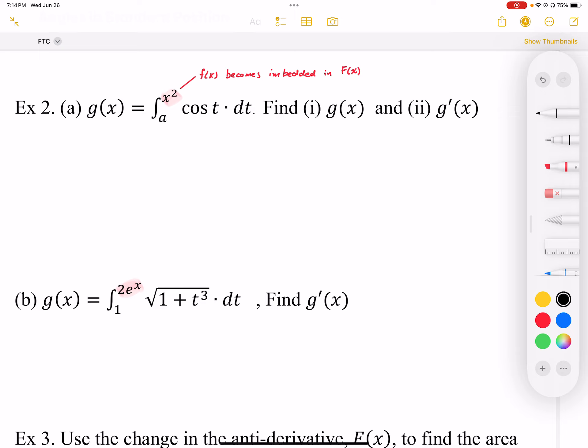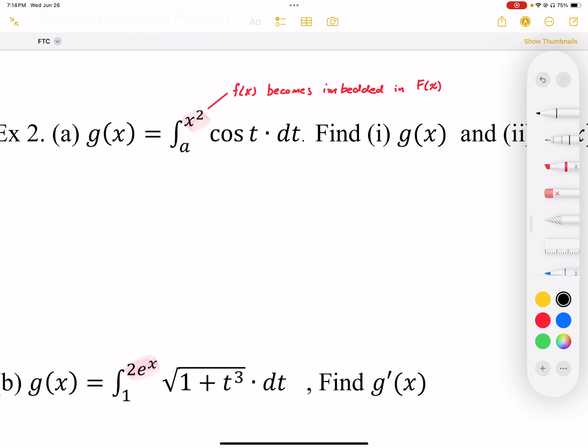We've seen that the integral and the derivative undo each other. Now what happens in this case here? Notice that in this case we now have a function as the end bound.